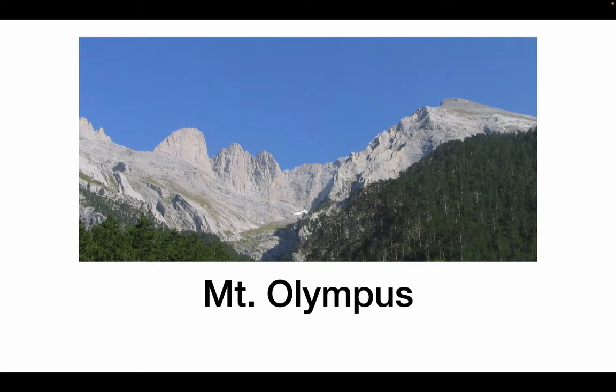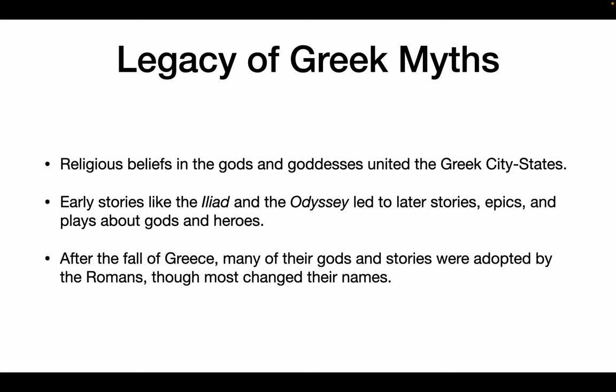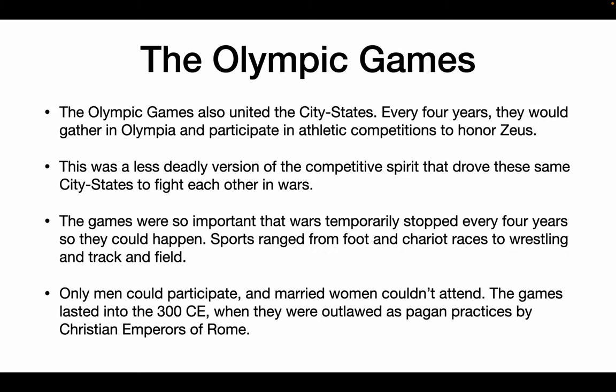It's not quite clear where the gods lived, but they were somewhere in there. Religious beliefs in believing in gods and goddesses helped to unite these city-states. Stories like the Iliad and the Odyssey led to further stories about Greek gods and goddesses. After the fall of Greece, many of these gods and stories were actually taken on by the Romans. The Romans often had the same sorts of gods and goddesses as the Greeks did, however a little more warlike and usually a little less peaceable. They usually also changed their names.